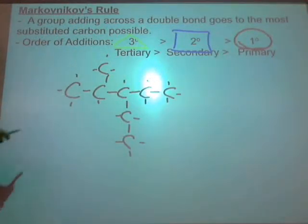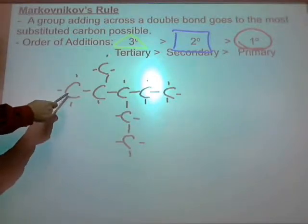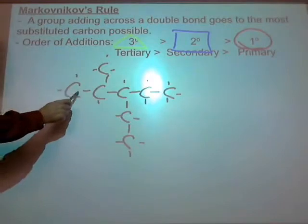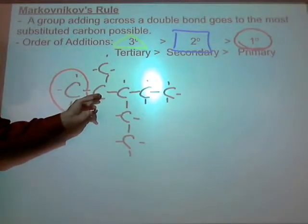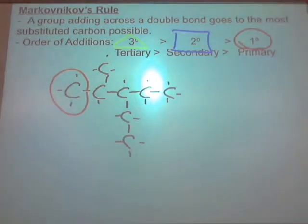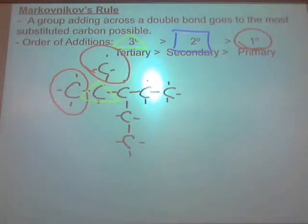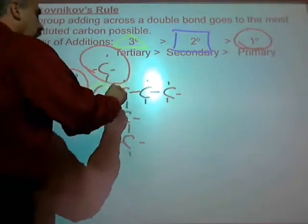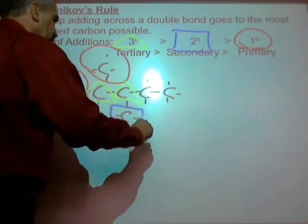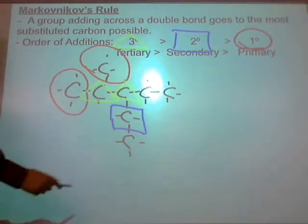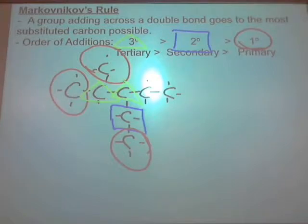Let's identify each carbon. This one here - is it a box, circle, or triangle? It's primary - circle it in red - because it's only bound to one other carbon. Primary means bound to one other carbon. What about this one right here? Tertiary - triangle - because he's bound to one, two, three other carbons. The one above him? Primary - only bound to one other carbon. This guy right here? Tertiary - bound to one, two, three other carbons. This one down here? Secondary - box. And the one below him? Primary - circle.